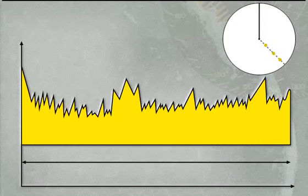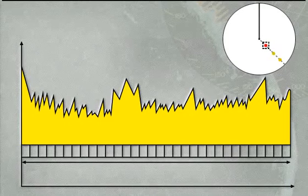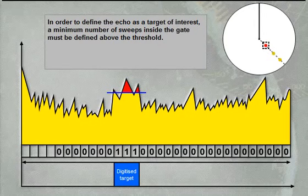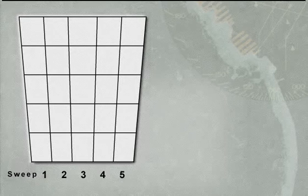The distance from the radar antenna to the maximum range of the ARPA tracking system is divided into many small range cells, each cell representing, for example, only 6 metres in distance. When the tracking gate is activated, a threshold is established inside the gate, and only radar echoes with amplitude above the threshold are defined as a possible target and digitised. To define the echo as a target of interest, a minimum number of cells must be defined above the threshold.